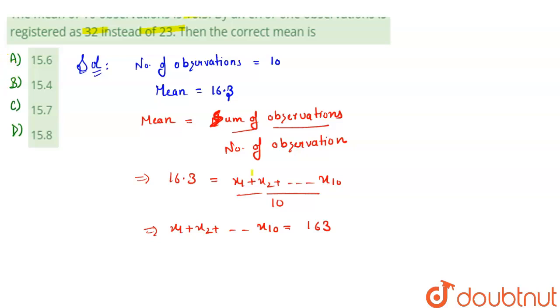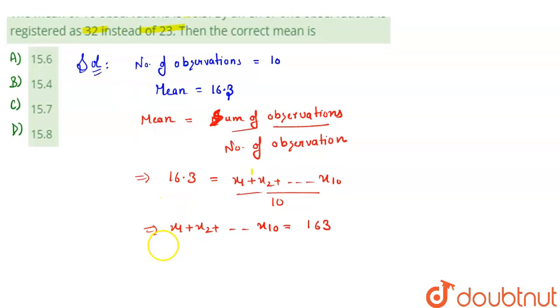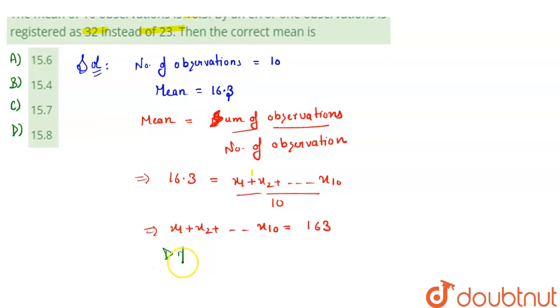how much difference is added. 32 registered instead of 23. So what is the difference between the observations? The difference is 32 minus 23, which equals